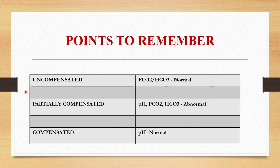In short, if it is uncompensated, either PCO2 or bicarbonate will be normal. If it is partially compensated, all the values will be abnormal — pH, PCO2, and bicarbonate. If it is fully compensated, then the pH will be absolutely normal. From this you can easily identify whether it is uncompensated, partially compensated, or fully compensated.